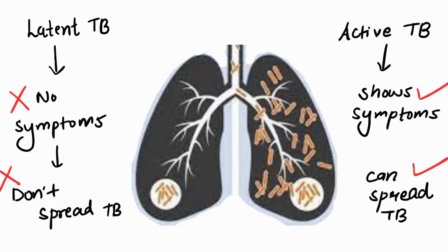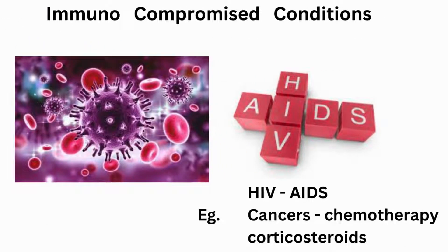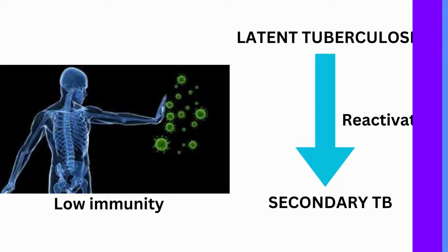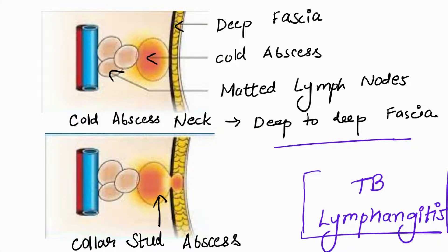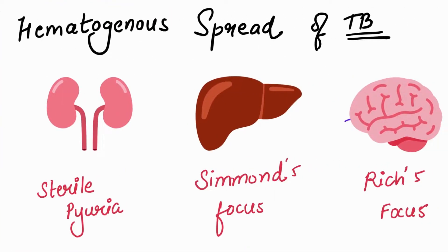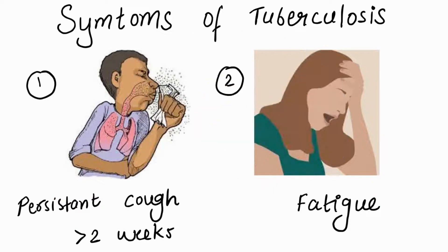Whenever your immunity gets suppressed due to a disease like HIV/AIDS, this bacteria gets the opportunity and your latent TB reactivates to cause secondary TB. It can now spread to various organs — causing cold abscess in your lymph nodes, and spreading to kidneys and liver through the blood via the hematogenous route.